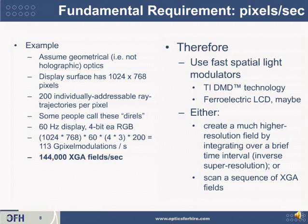At 60 hertz with 4-bit for each of RGB, when you multiply all these out, you find that you need 113 billion pixel modulations per second. This works out to be equivalent to 144,000 XGA fields per second. That's a lot of light switching, and it's really at the edge of what today's MEMS-based light modulators can do. This suggests that in 2010 at least, you need to use a fast spatial light modulator such as a TI-DMD, or maybe some ferroelectric LCDs, but those are still lagging behind by orders of magnitude.